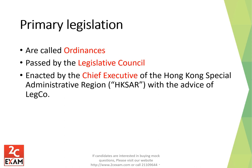Primary legislations are called ordinances. Ordinances are basically law — if you violate an ordinance, there is a possibility you go to jail. They are passed by the Legislative Council, which is the lawmaking body of Hong Kong. Every law proposed by the executive council should be passed by the Legislative Council. Once passed by LegCo, primary legislation will be enacted by the Chief Executive of the Hong Kong Special Administrative Region with the advice of LegCo.